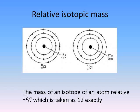We know that atoms of an element often consist of several different isotopes, and these vary in the number of neutrons that they have in their nucleus, and hence their mass number is different. Each one of these isotopes has a mass, which we refer to as the relative isotopic mass. We use the word relative because it's relative to carbon-12, which is taken as 12 atomic mass units exactly.